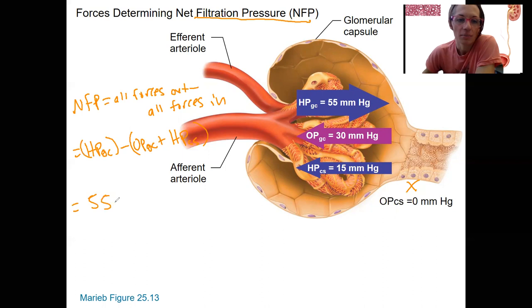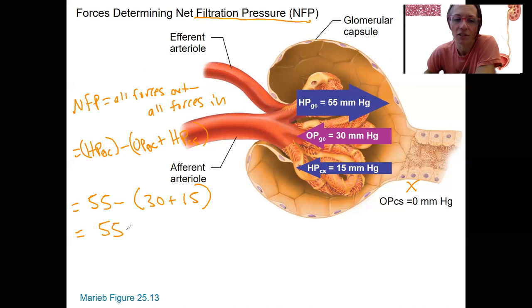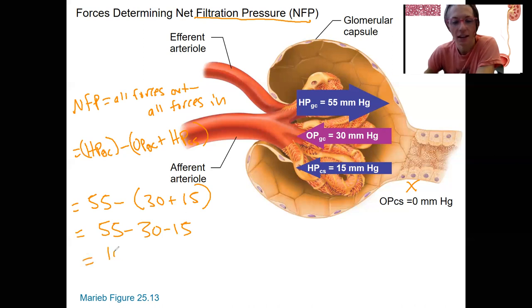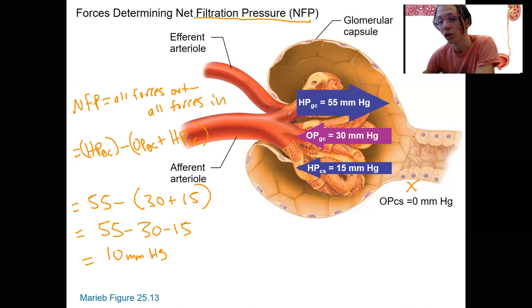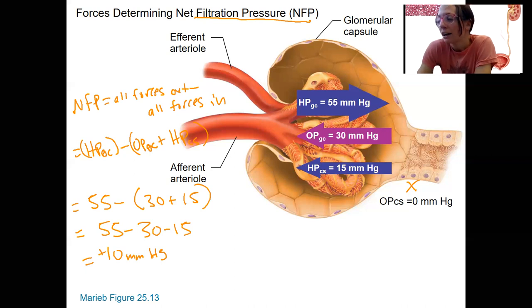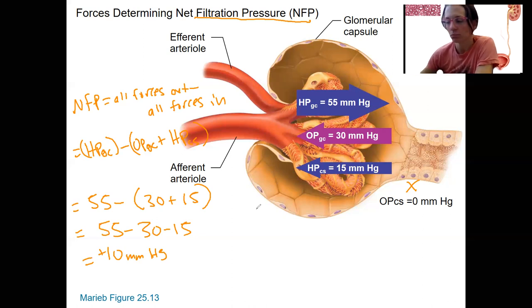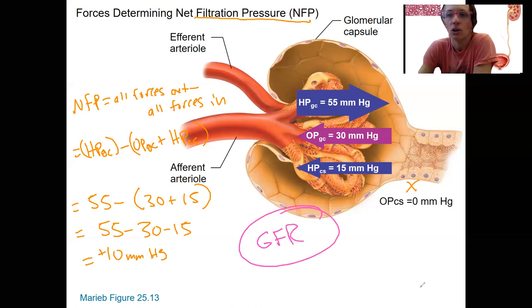So that's 55 minus our two forces in, which are 30 plus 15. You can also do 55 minus 30 minus 15 — same thing. Either way, it is 10 millimeters of mercury. That's the net filtration pressure — it is positive, positive 10 millimeters of mercury. That is a small pressure, but high enough to allow for glomerular filtration. Net filtration pressure at the glomerulus is called the glomerular filtration rate, and now you know what goes into it.